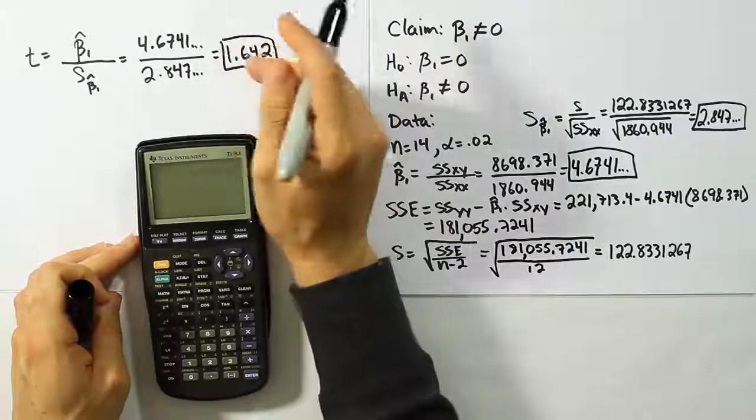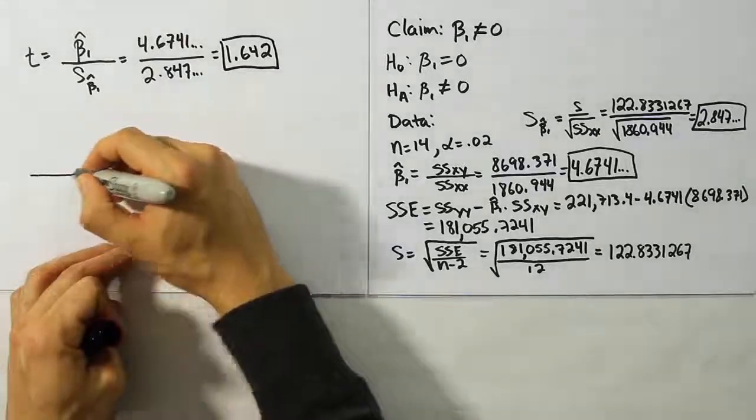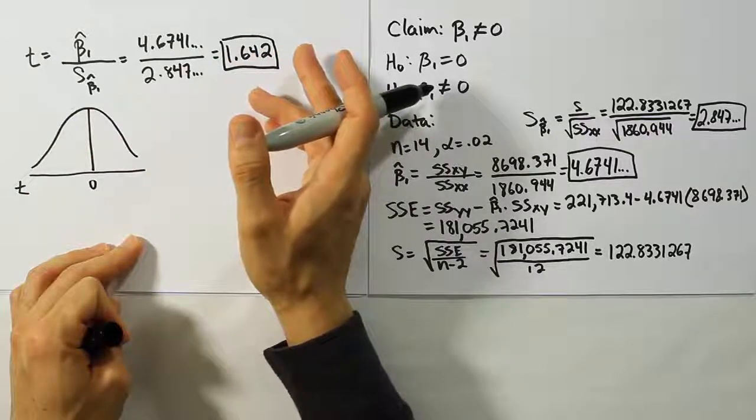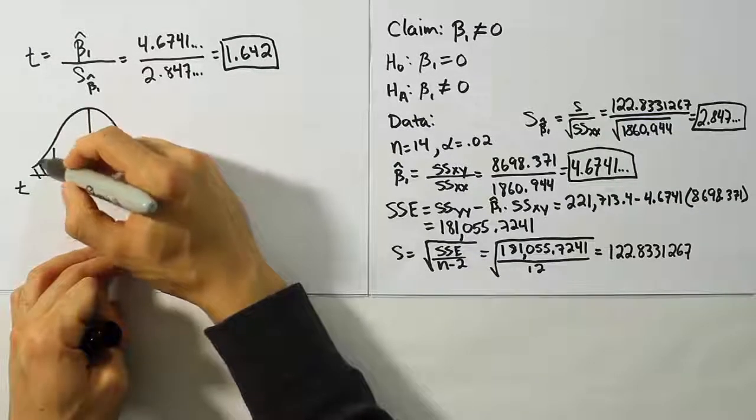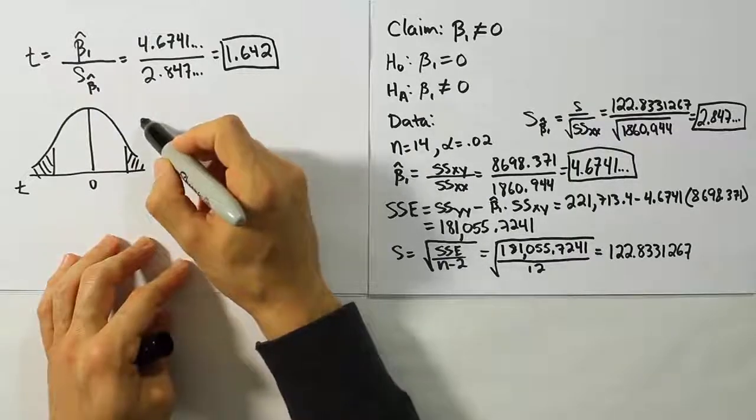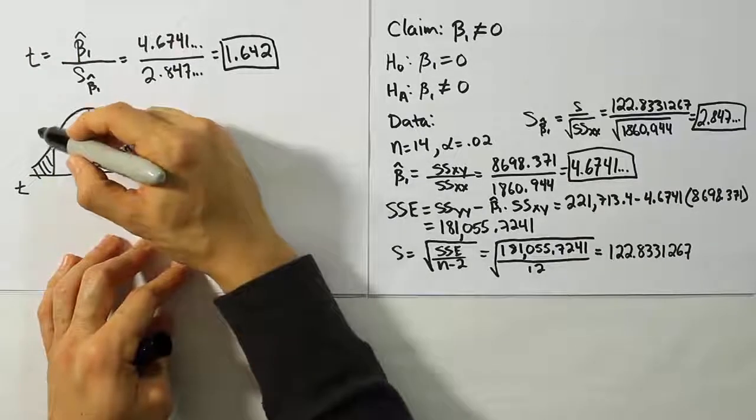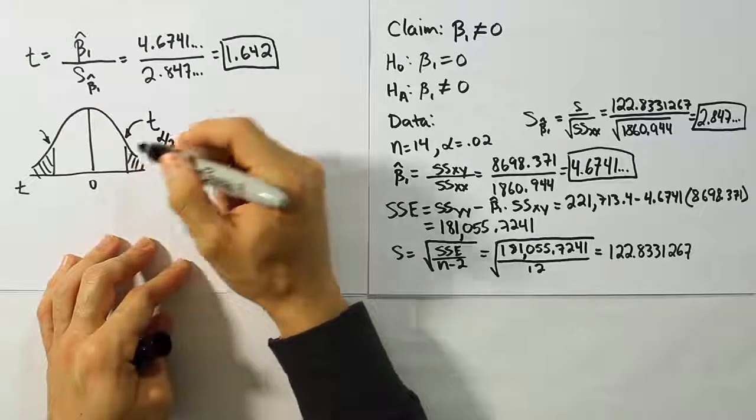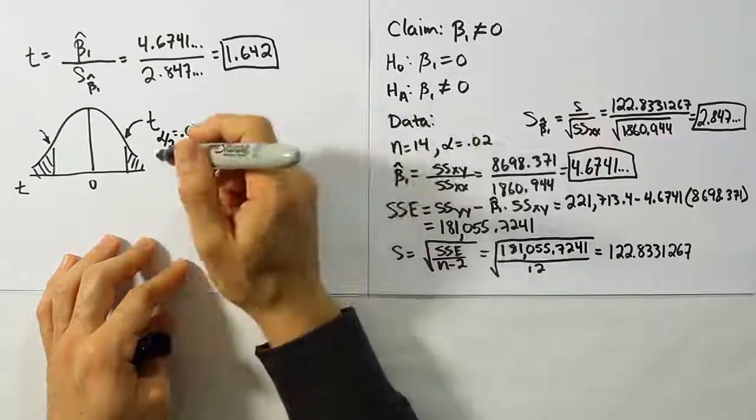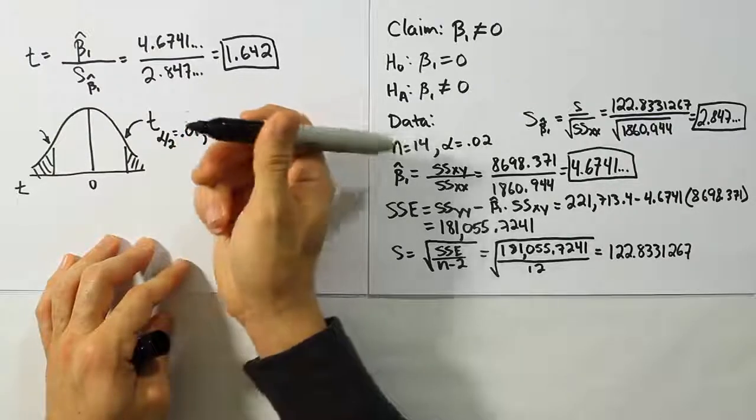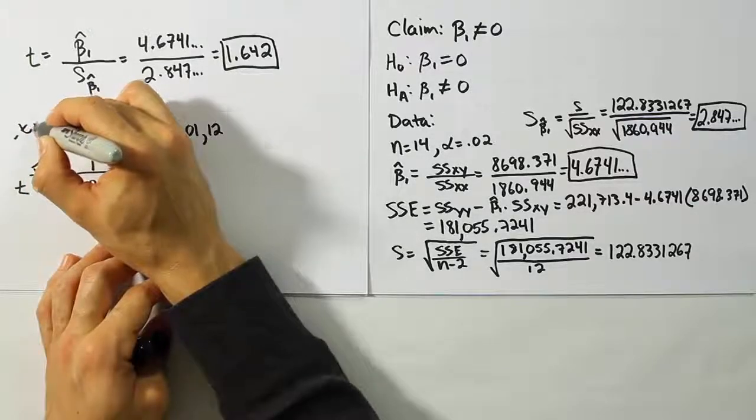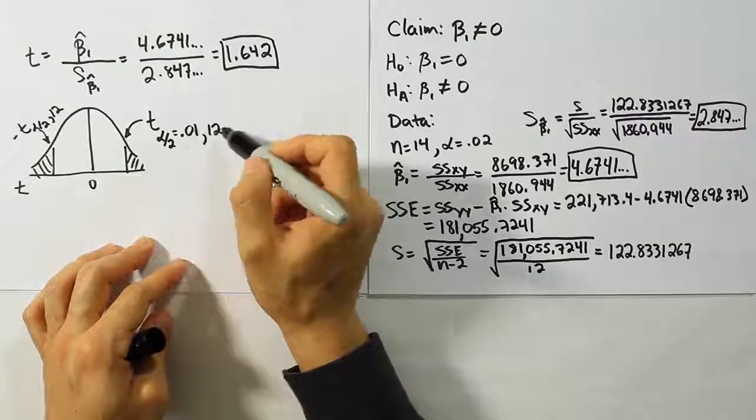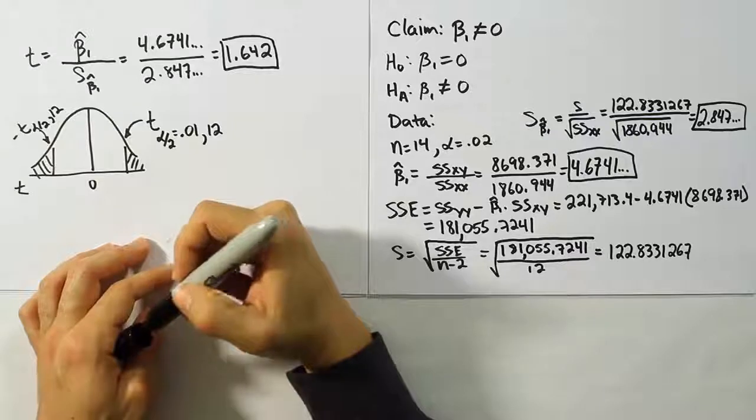With that test stat value, our next step is to compare it against a critical value. Let's draw our bell curve. Let's label our rejection regions by looking at HA and realizing that because it says not equal to there, it's going to be a two-tailed hypothesis test. So we're going to be dividing alpha into two sides. We want the critical value T alpha divided by 2 since it's in a two-tailed test. So we're going to use the value 0.01 or half of alpha, which is 0.02. And we're going to use degrees of freedom 12 because we use degrees of freedom n minus 2. Let's go to our table. We're looking for 0.01 in one tail with 12 degrees of freedom.